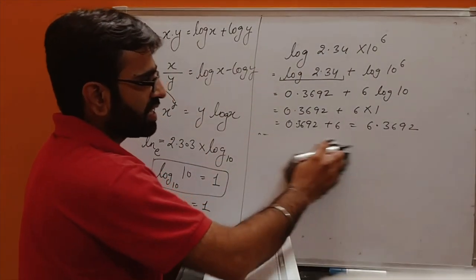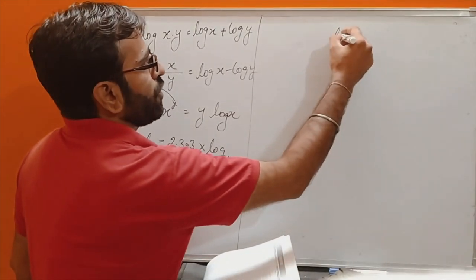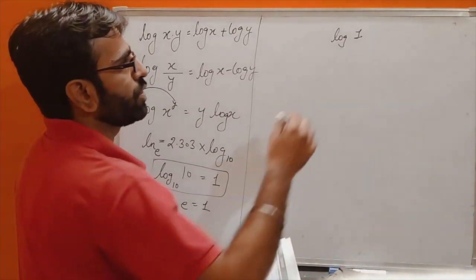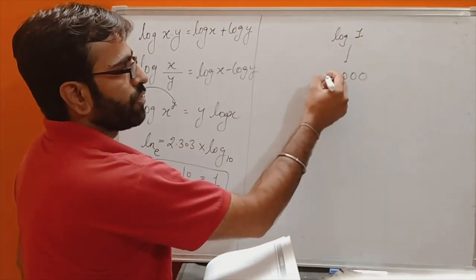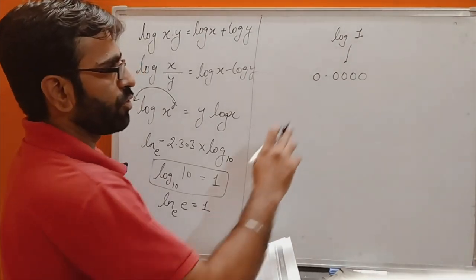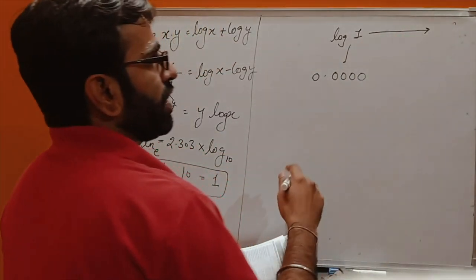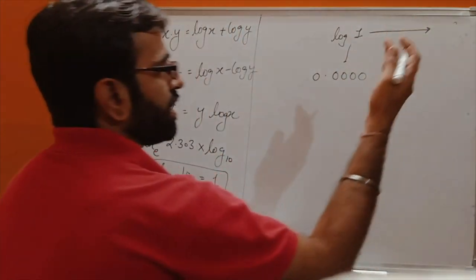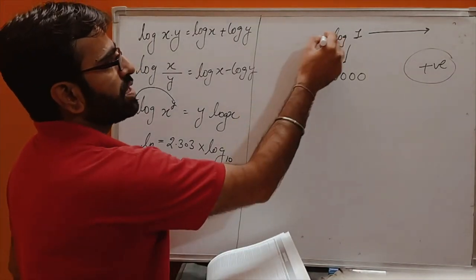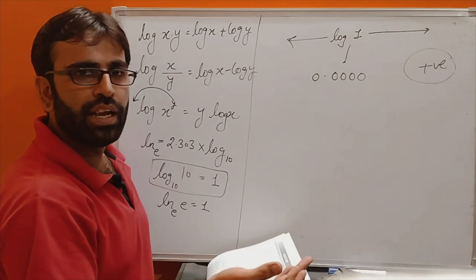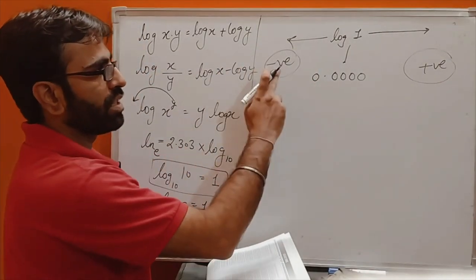Now let's take an example with a value less than 1. The value of log 1 in the table is 0.0000, so log 1 = 0. If the value is greater than 1, like log 10 or log 15, the result will be positive. If the value is less than 1, like log 0.something or log(2.3 × 10^−5), then the result will be negative.